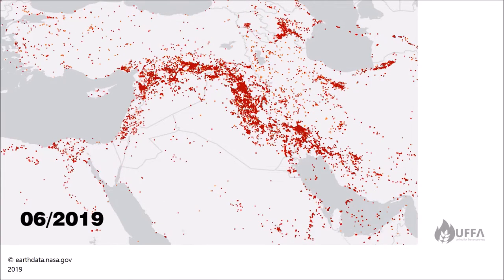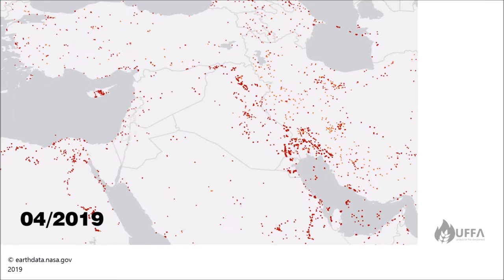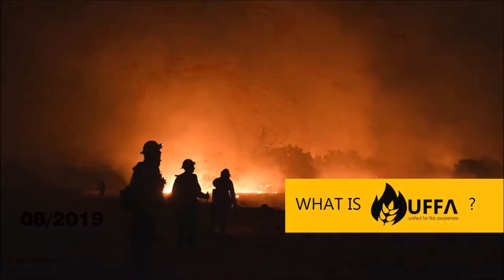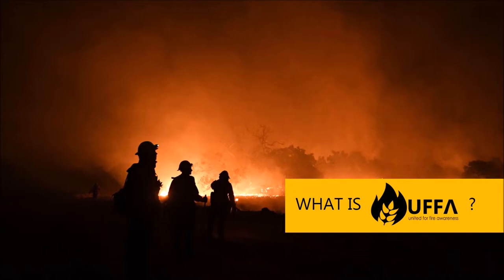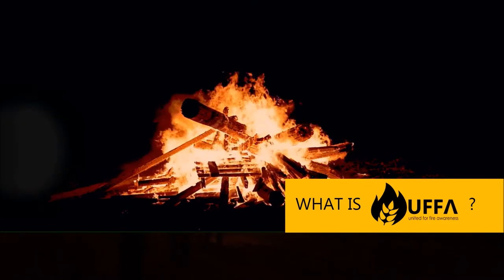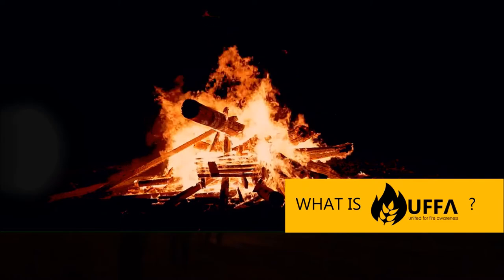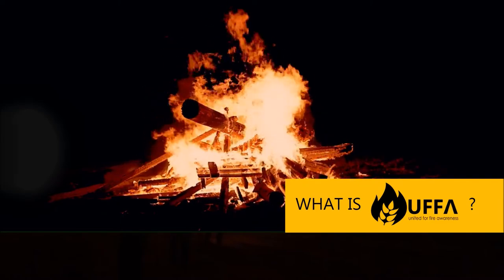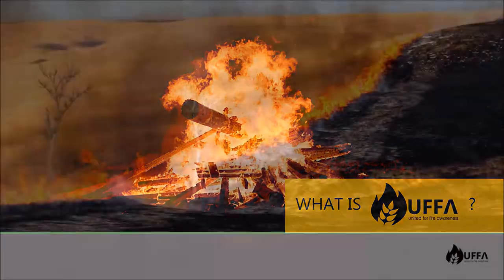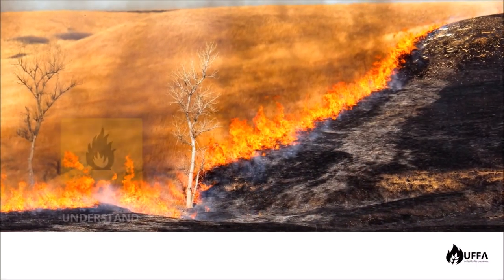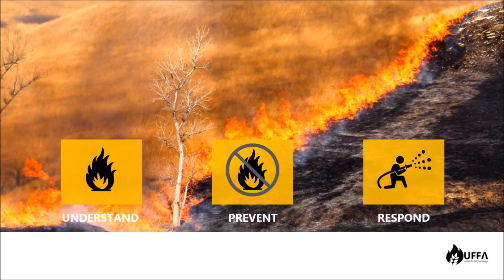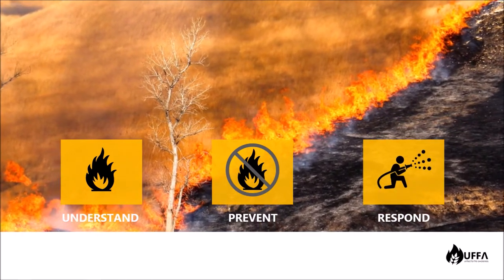This map from NASA shows us the situation of wildfire in summer 2019. Wildfire is destabilizing the remaining infrastructure besides the necessities of life. AFA, United for Fire Awareness, is helping and training people how to respond to wildfire in the future. In this video we will learn about wildfire and how to prevent it, and how to respond to future fire disasters.